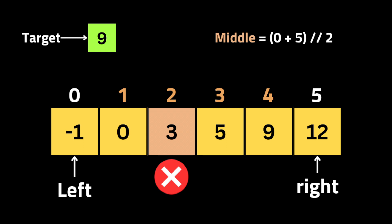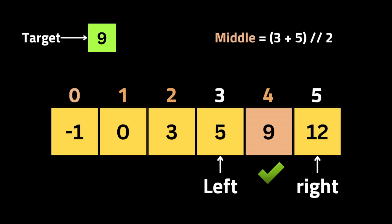The left pointer starts at the first element and the right pointer starts at the end. We then calculate the middle — (left + right) / 2 — so we know which part to eliminate. Since the target is larger than the middle element, all numbers to the left must be eliminated, meaning the target is somewhere after the middle.